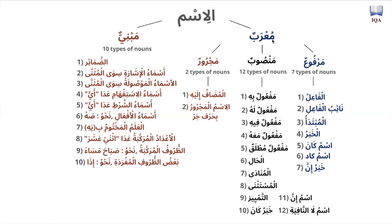There are also nouns that are mu'rab, and this is the majority. The majority of nouns are mu'rab, meaning they can accept an i'rab al-lafdi — for example, muhammadun, muhammadan, muhammadin; baytun, baytan, baytin. These nouns that are mu'rab can either be marfu', mansoob, or majroor. This is what we're always trying to understand in grammar, and more specifically in al-Ajrumiyya — the verbs that are mu'rab and the nouns that are mu'rab.